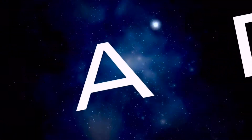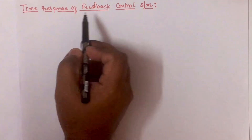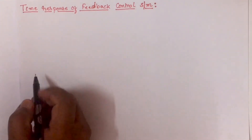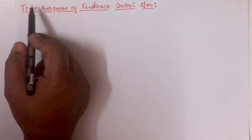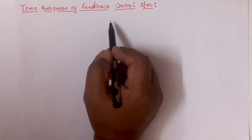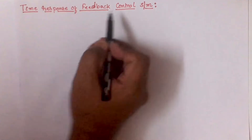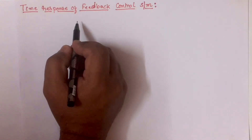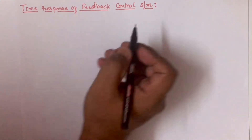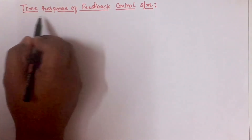Hello friends, welcome to EC Academy. In this lecture, let us understand the time response of feedback control systems. Time is the independent variable in most control systems, hence it is very important to analyze the response of the control system with respect to time. To analyze the response, we need to observe the variation of the output with respect to time. So the system stability and accuracy will always be dependent upon the time response analysis.